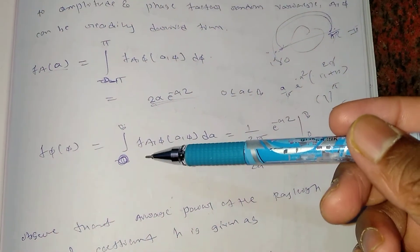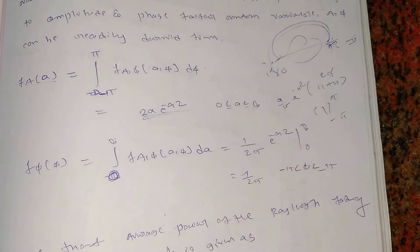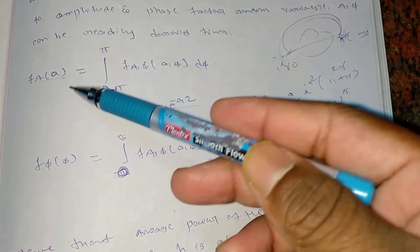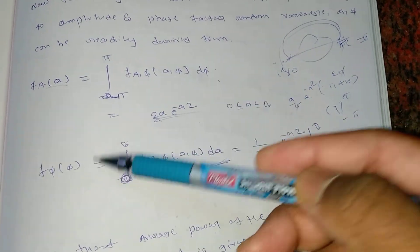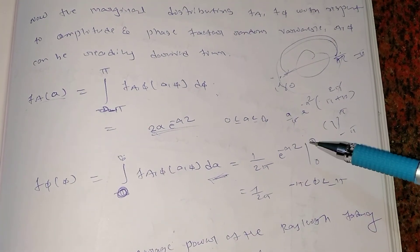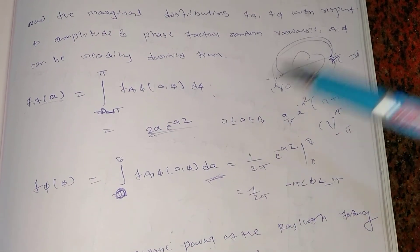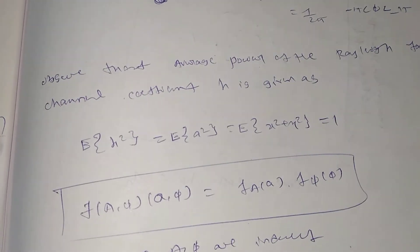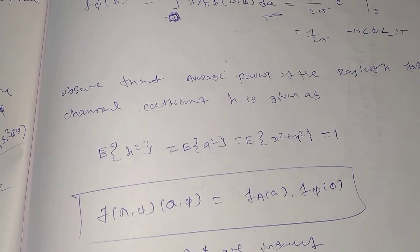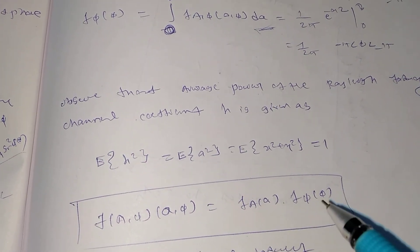For the phase marginal, I integrate f(a, φ) with respect to a from 0 to infinity. I get f_φ(φ) = (1/2π)·e^(−a²) evaluated from 0 to infinity, which gives f_φ(φ) = 1/(2π), where φ ranges from −π to +π. This confirms the phase is uniformly distributed. Also, the expectation of x² + y² equals 1, and the joint distribution f_a(a)·f_φ(φ) factors as a product of the two independent marginals.